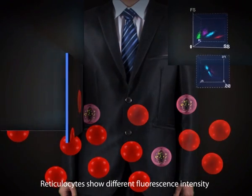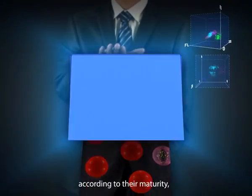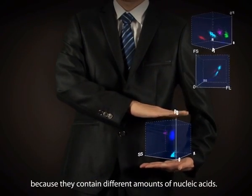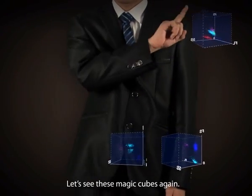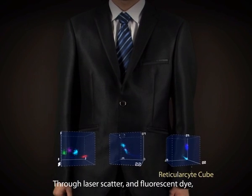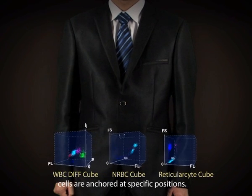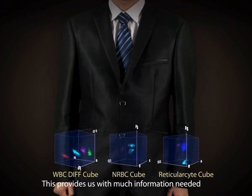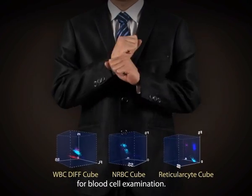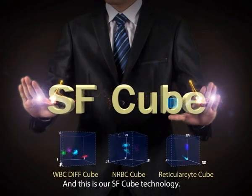Reticulocytes show different fluorescent intensity according to their maturity, because they contain different amounts of nucleic acids. Let's see these magic cubes again. Through laser scatter and fluorescent dye, cells are anchored at specific positions. This provides us with much information needed for blood cell examination. And this is our SF-Cube technology.